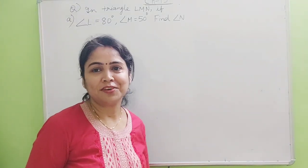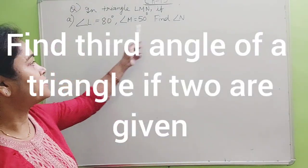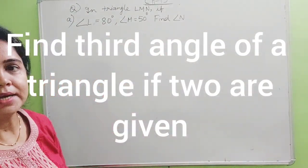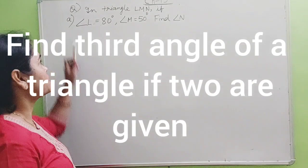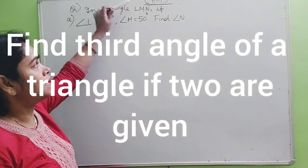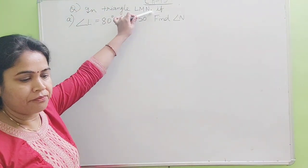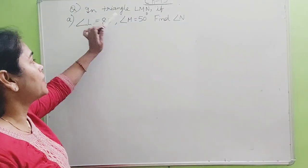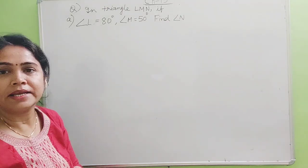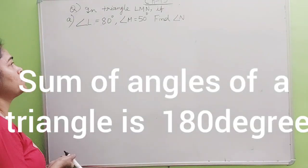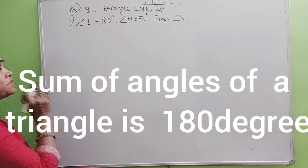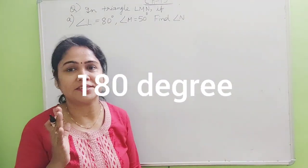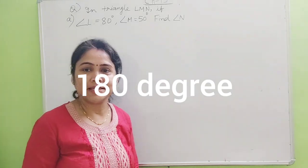Hello everyone. In this video we will learn to find the third angle if two angles are given in a triangle. So see this question from your book: in triangle LMN, if angle L is equal to 80 degrees and angle M is equal to 50 degrees, find angle N. For that, we use the rule and property that the sum of the angles of a triangle is 180 degrees.